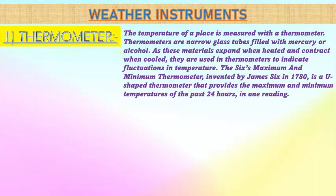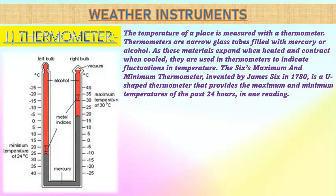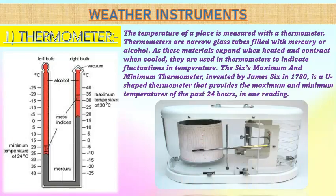First comes the thermometer. The temperature of a place is measured with a thermometer. Thermometers are narrow glass tubes filled with mercury or alcohol. As these materials expand when heated and contract when cooled, they are used in thermometers to indicate fluctuations in temperature. This is not the thermometer used to check fever, but the thermometer used to check environmental temperature. The Six's maximum and minimum thermometer provides the maximum and minimum temperatures of the past 24 hours in one reading.